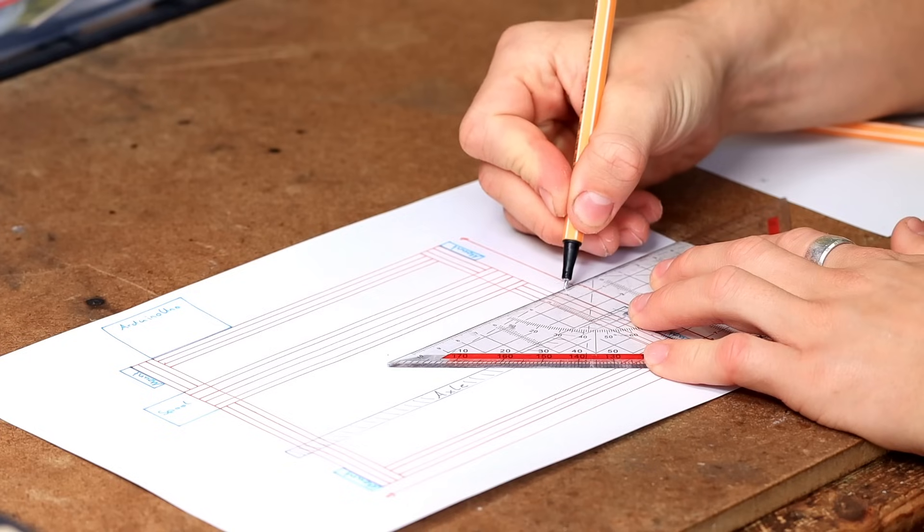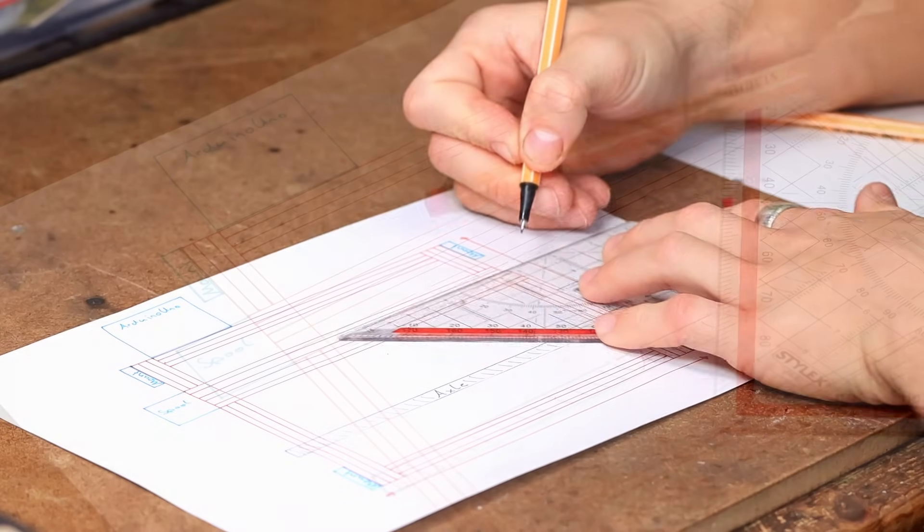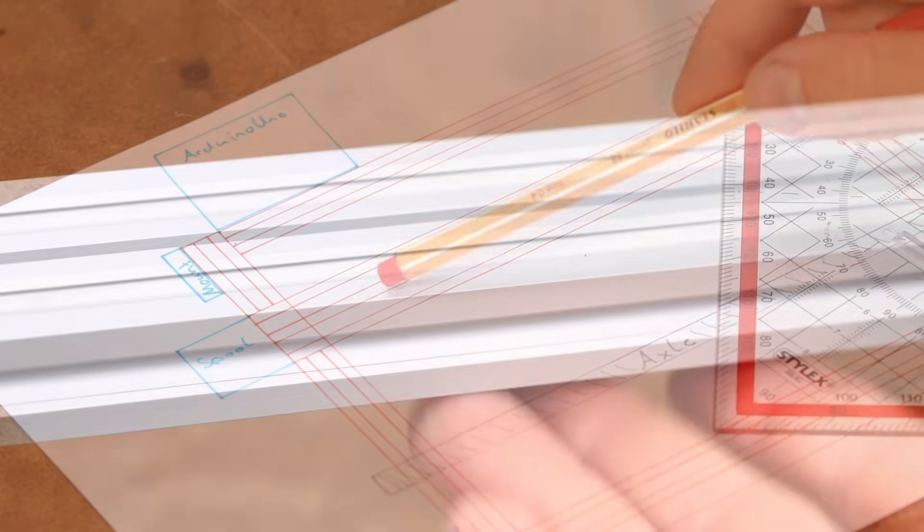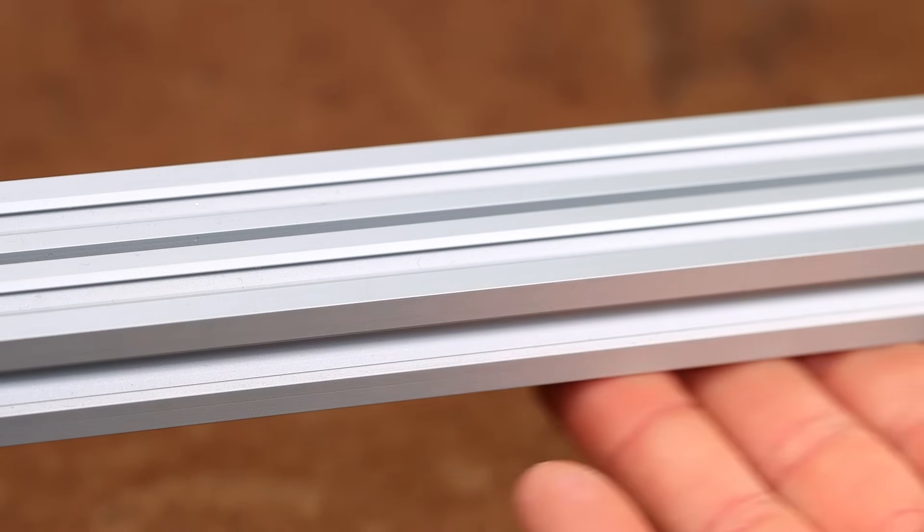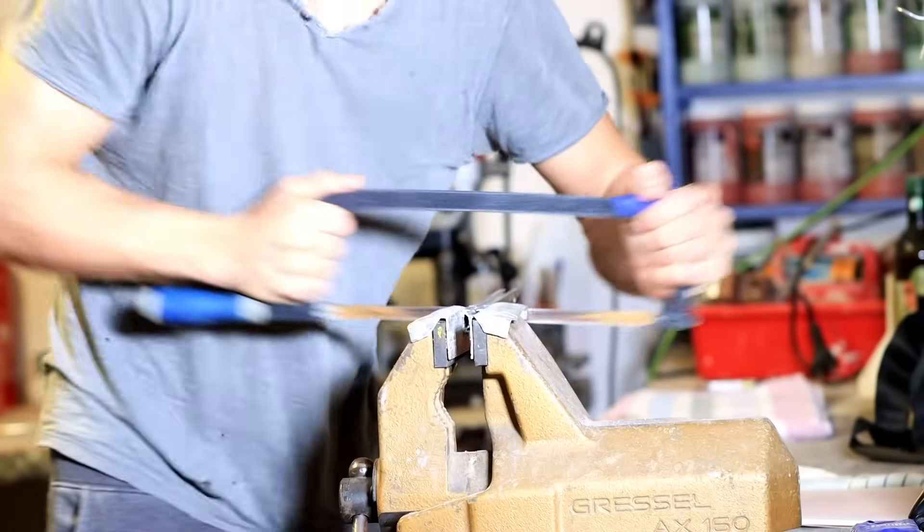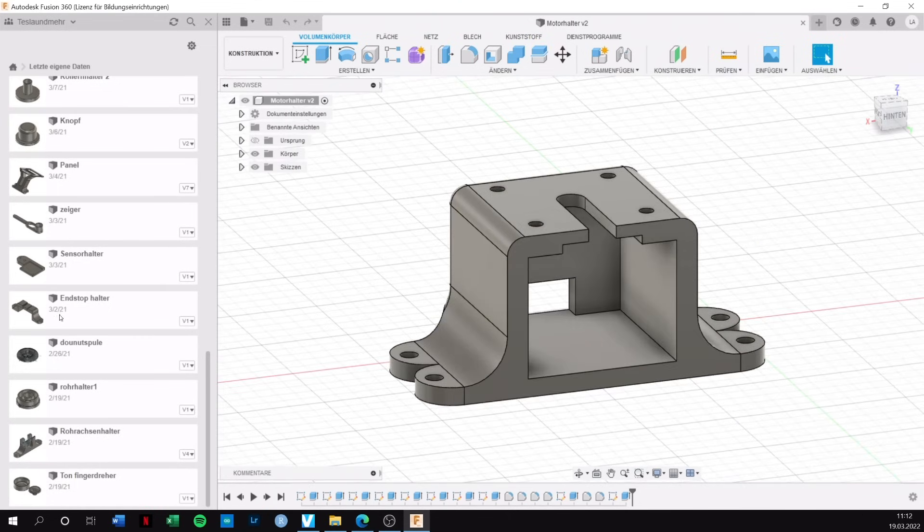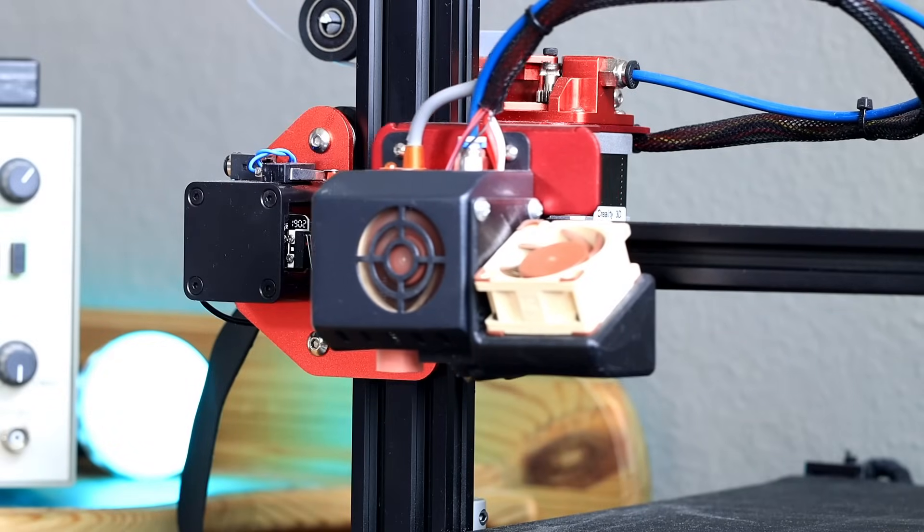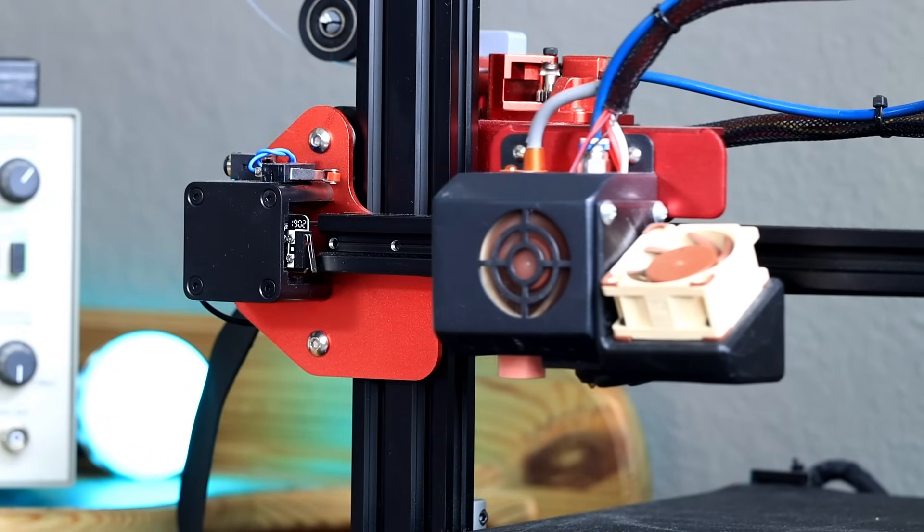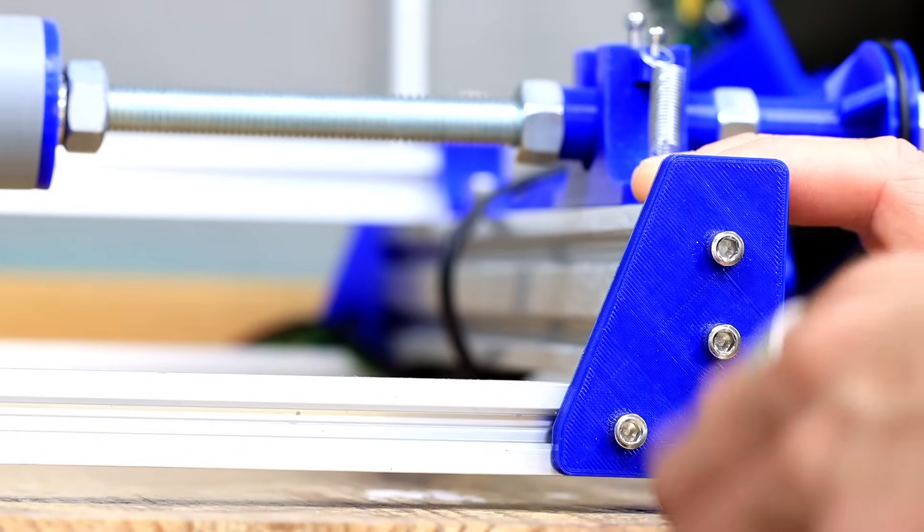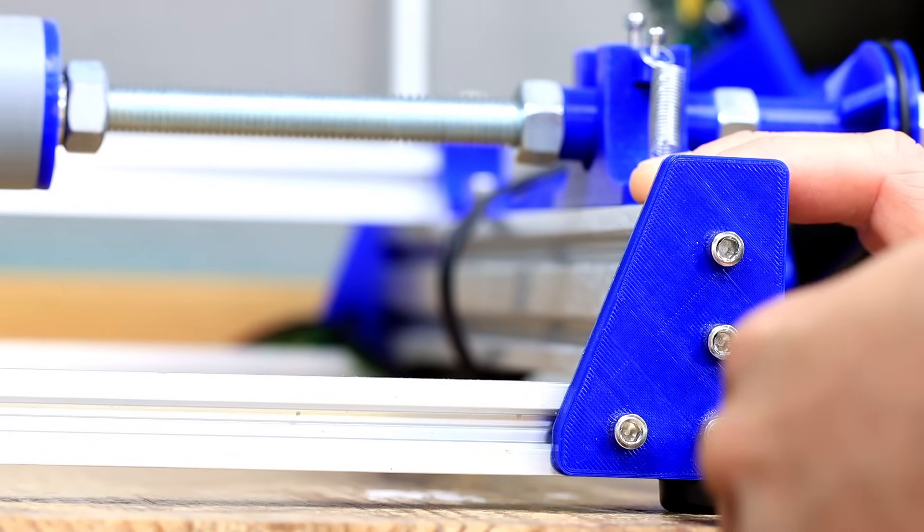First I made some sketches of how the machine should look like. The frame of the machine should be very solid and robust. That's why I decided to use aluminum profiles. These can be processed well and combined with 3D printing. I then used Fusion 360 to draw all the necessary components and then 3D printed them. The assembly was super easy because you could simply screw the 3D printed parts to the profiles with the help of these small nuts.